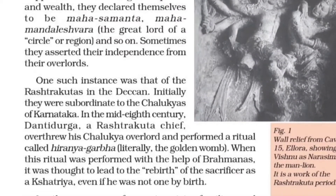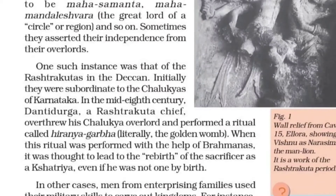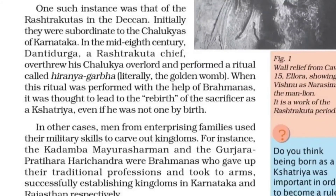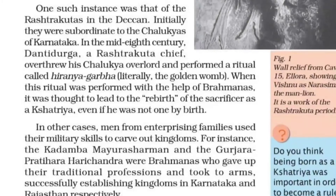One such instance was that of the Rashtrakutas in the Deccan. Initially they were subordinate to the Chalukyas of Karnataka. In the mid-8th century, Dantidurga, a Rashtrakuta chief, overthrew his Chalukya overlord and performed a ritual called hiranyagarbha — literally 'the golden womb.' When this ritual was performed with the help of Brahmans, it was thought to lead to the rebirth of the sacrificer as a Kshatriya, even if he was not one by birth.